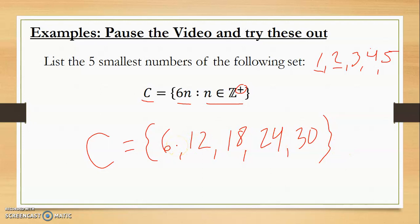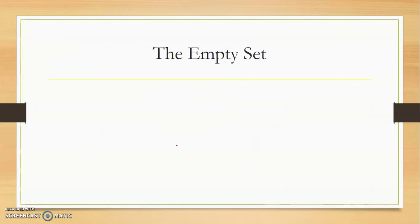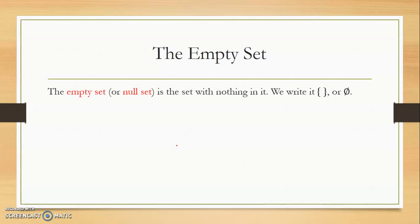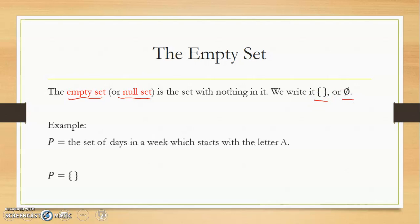Empty set — also called null set. A set with nothing in it can be written as either of two symbols, and you might see both. For example, set P is defined as the set of days in a week that start with the letter A. Is there any day that starts with the letter A? No. So there are no elements, and we write set P as a null set using the null set symbol.